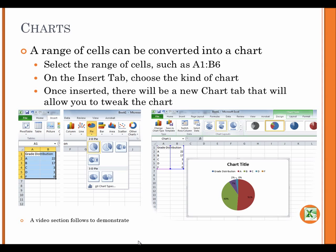Charts. A range of cells can be converted into a chart. Select the range of cells, such as A1 colon B6. On the insert tab, choose the kind of chart. Once inserted, there will be a new chart tab that will allow you to tweak the chart.